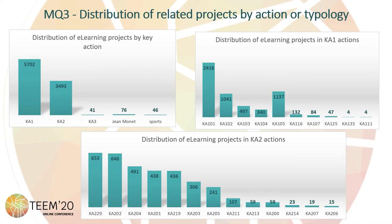The third question has to do with the distribution of e-learning related projects by action. The fundings in this case are Key Action 1 and Key Action 2, which are the most relevant. The fields more active in projects connected with e-learning are school education, followed by vocational education and training.